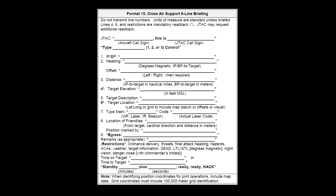Line 6 is for target location; it can be given as a 6 or 8 digit grid coordinate or a bull's call. Line 7 is for target marking method. Options are no mark, smoke, laser, IR strobe, or IR laser.